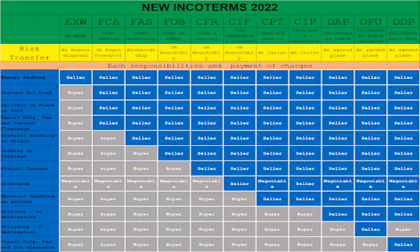These are the Incoterms. Counting them: first, second, third, fourth, fifth, sixth, seventh, eighth, ninth, tenth, eleventh. Total, we have 11 Incoterms. This is the first question which we can expect in the examination.